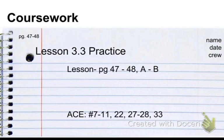Here's your coursework. Lesson 3.3 practice starts on page 47 through 48, A through B. And ACE problems are going to be 7 through 11, 22, 27 through 28, and 33. Make sure you check page numbers 47 and 48 for this. We have the title, we have the name, date, and crew. Alright, ladies and gentlemen, have fun.